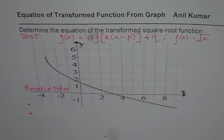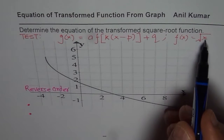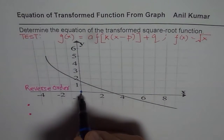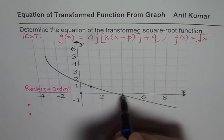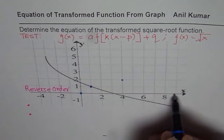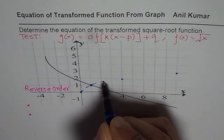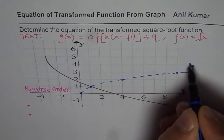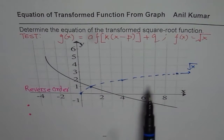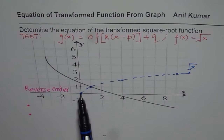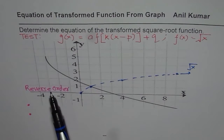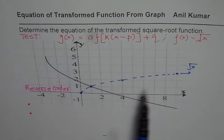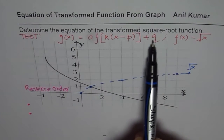So let's have a look at the translation — translation of the square root function. The parent function is the square root function. Let me just sketch one here: that is √x. Now if you look at the graph, the initial point has moved three units left and five units up.